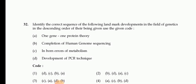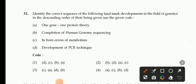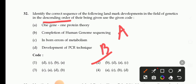Next question: Identify the correct sequence of the following landmark developments in the field of genetics in the descending order. A: One gene, one protein theory. B: Completion of human genome sequencing. C: Inborn error of metabolism. D: Development of PCR technique. Codes: 1-DCBA, 2-BDAC, 3-CADB, 4-ACBD. The correct answer is 2nd, so sequence is B, D, A, C.